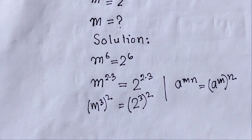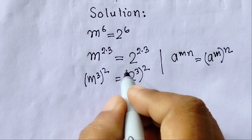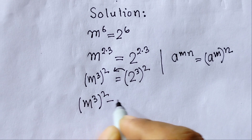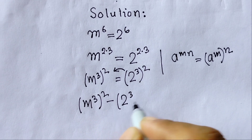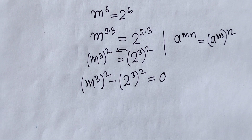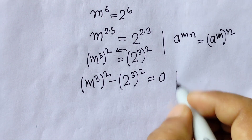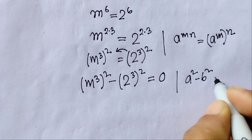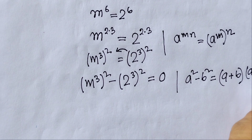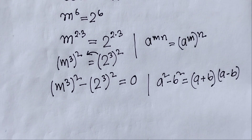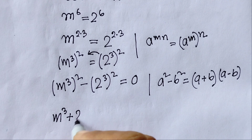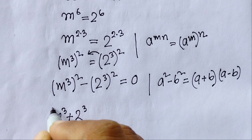Using that formula on equation number 1, we rewrite it as m minus 2, times m squared plus 2m plus 4, equals zero. This gives us two cases: the first case is m minus 2 equals zero, and the second case is m squared plus 2m plus 4 equals zero.